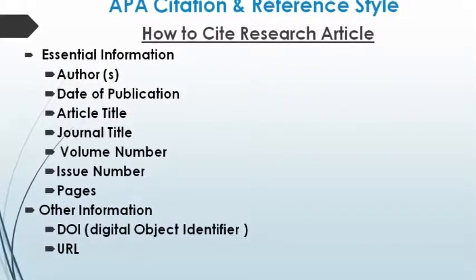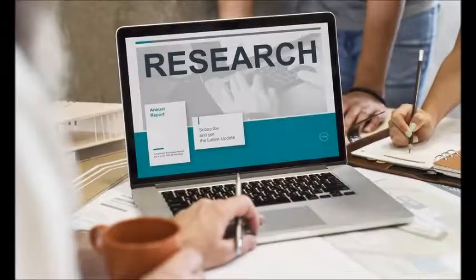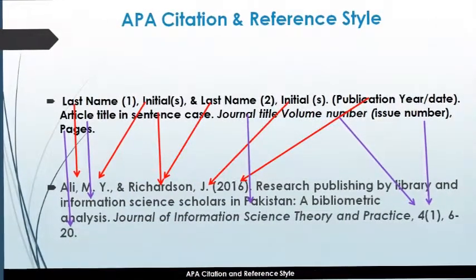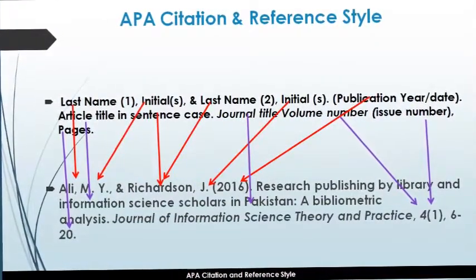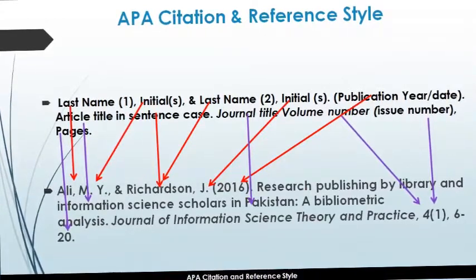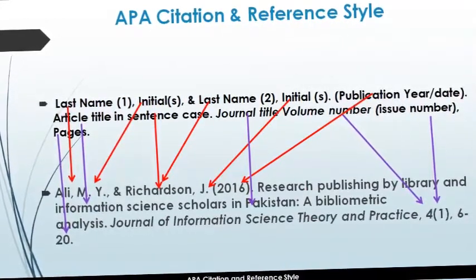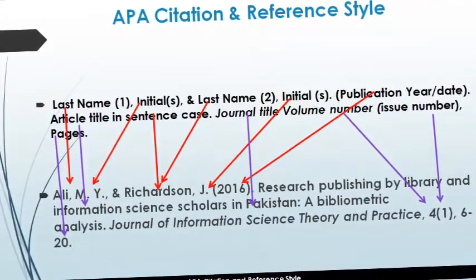In APA referencing style, we reference as follows: the last name of the author is written first, and then the initial name. If there are two authors, the second author's last name and his or her initial name are also included.